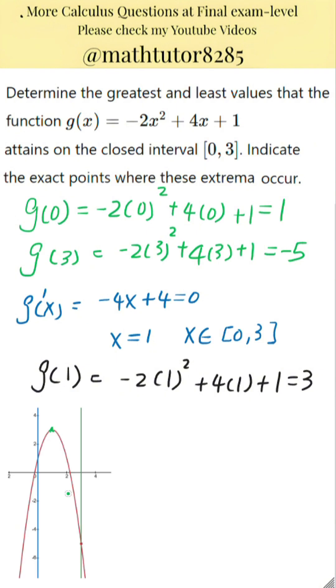Next step is to compare all the values we found. At x equals 0, the function value is 1. At x equals 1, the function value is 3. At x equals 3, the function value is negative 5.